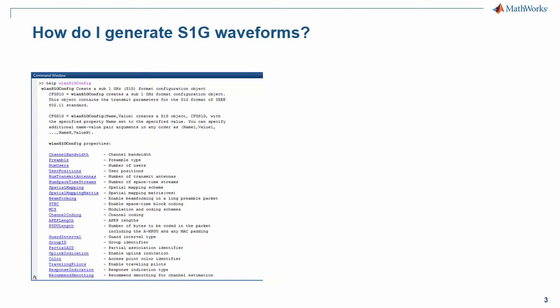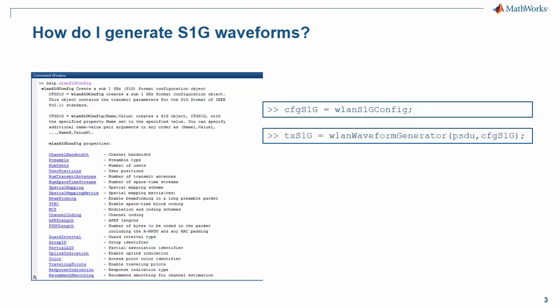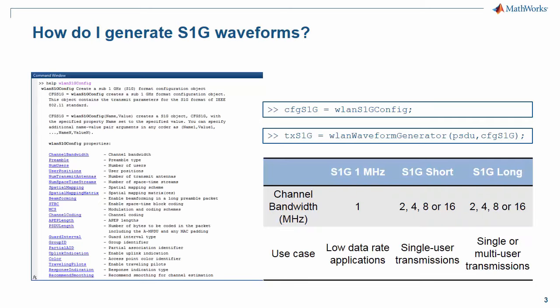Two steps are required to generate S1G waveforms in WLAN System Toolbox. First, you can set up the transmission parameters of the desired S1G waveform in the configuration of the WLAN S1G config. In the second step, you can call WLAN waveform generator to generate the S1G waveform specified by the configuration object and the PSDU input bits to transmit. Three modes are defined in the S1G standard and can be specified by a WLAN S1G config object. The S1G 1 MHz mode operates with a 1 MHz channel bandwidth and is intended for low data rate applications. S1G short and long preamble modes support channel bandwidth between 2 and 16 MHz. S1G long preamble mode allows for multi-user transmissions. In the following slides, we show how each S1G mode can be configured to generate the corresponding waveform.